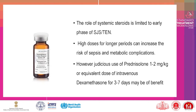Broad-spectrum antibiotics to cover Staph, Strep, and Pseudomonas — change according to culture results and avoid the suspected drug class. Adjuvant systemic therapy: the role of systemic steroids is limited to the early phase of SJS/TEN. High-dose steroids for a long period can increase the risk of sepsis and metabolic complications. However, judicious use of prednisolone 1–2 mg per kg or equivalent dose of intravenous dexamethasone for 3–7 days may be of benefit.